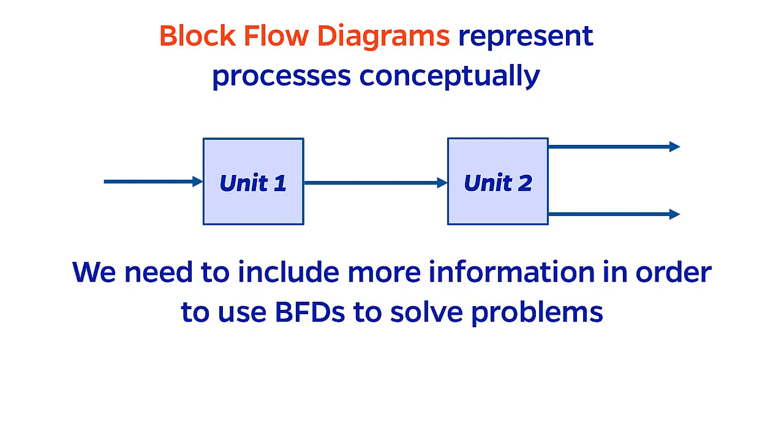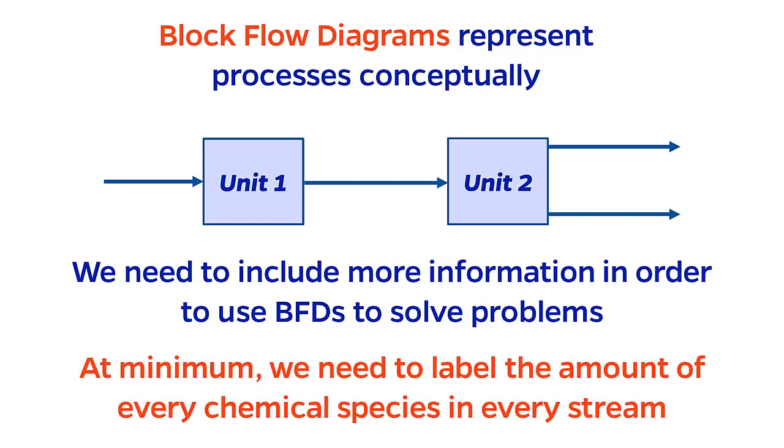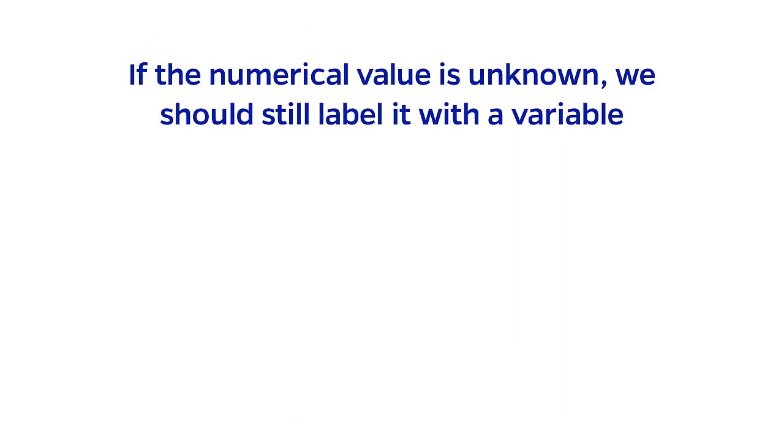But in order for these diagrams to be truly useful for solving problems, we have to include some more information on them. The most important thing that we need to track is the amount of every chemical species in every stream. This will form the cornerstone of the material balances that we'll do soon. Even if we don't know the exact numerical value, we should label the amount with a variable.